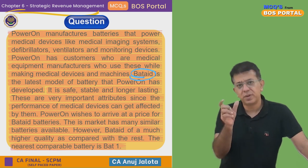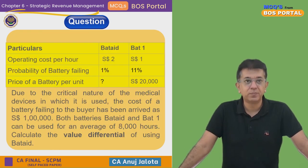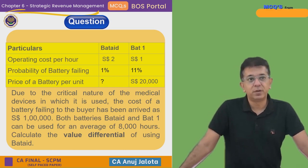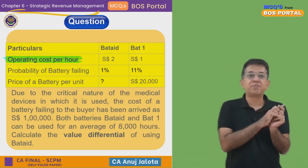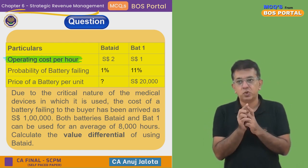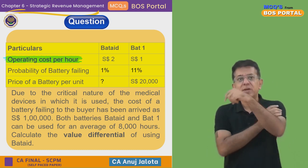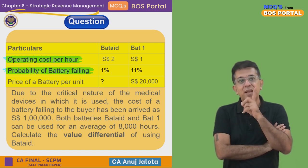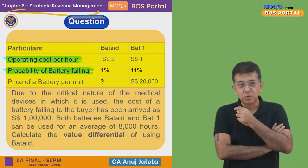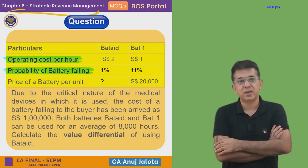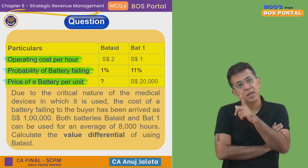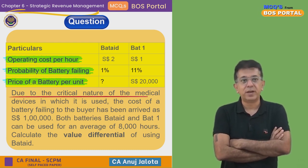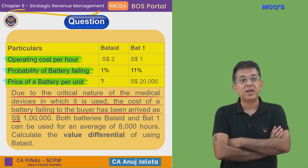So we make a battery called Batad and the competitor makes a battery called Bat One. Looking at the data: operating cost per hour for Bat One is one rupee per hour, while our battery Batad costs two rupees per hour — that is an advantage for Bat One. However, the probability of Batad failing is only one percent, compared to eleven percent for Bat One. The price of Batad per unit is what we need to find. Bat One costs twenty thousand rupees.